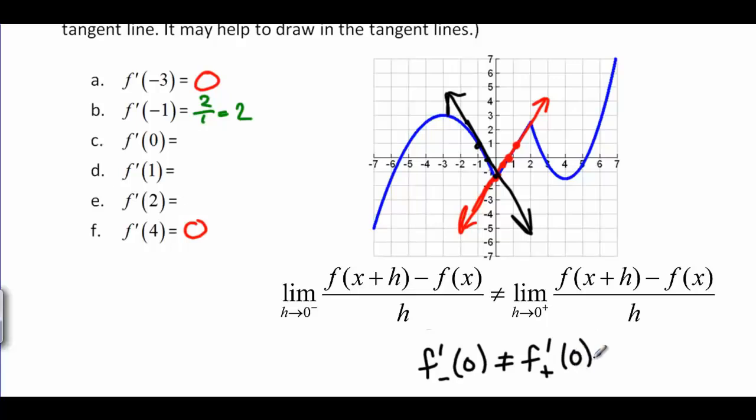And just like with our regular limits, this is a limit. So if you get two different answers from the two different sides, then the limit does not exist.